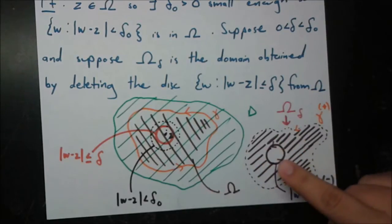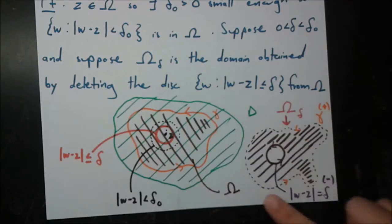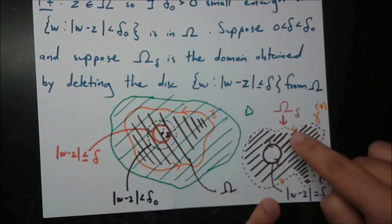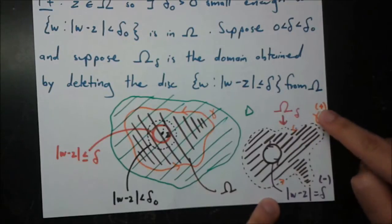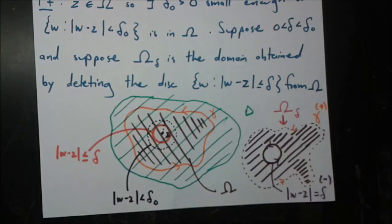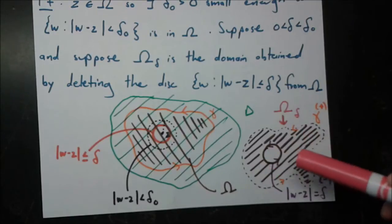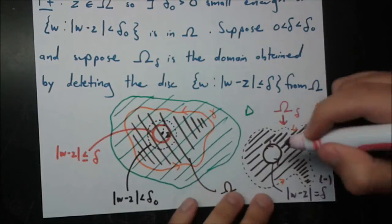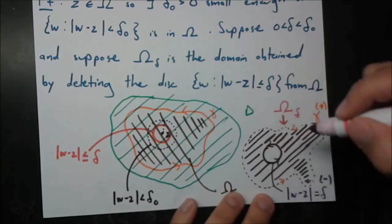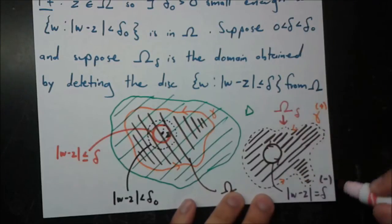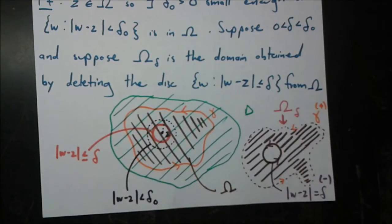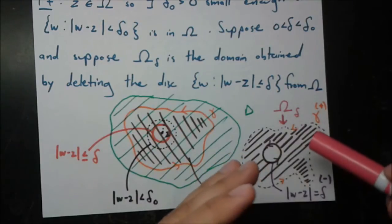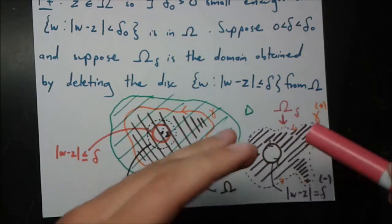This new domain omega_sub_delta is composed of two boundaries. Originally it was just composed of one boundary, gamma, which is still positively oriented — hence the plus. But now we've created a new boundary by making the hole. That new boundary is going to be negatively oriented, meaning as you travel across it, the domain is always to your right. As we travel in that direction, we're keeping the domain to our right, which is why there's a negative sign.